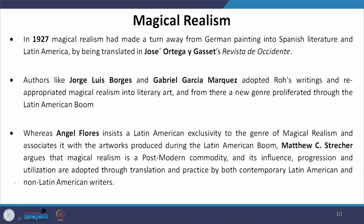In 1957, magical realism made a turn away from German painting into Spanish literature and Latin America by being translated in José Ortega y Gasset's Revista de Occidente. Authors like Jorge Luis Borges and Gabriel García Márquez adopted these writings and reappropriated magical realism into literary art, and from there a new genre proliferated through the Latin American boom. Angel Flores insists on a Latin American exclusivity to the genre of magical realism and associates it with the artworks produced during the Latin American boom.